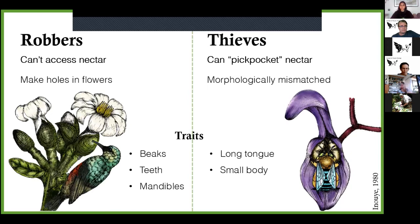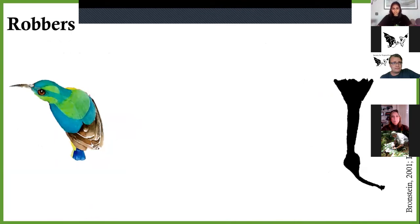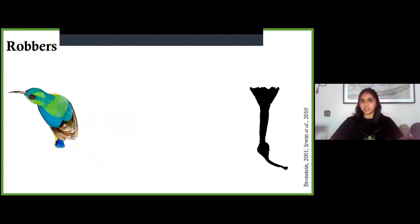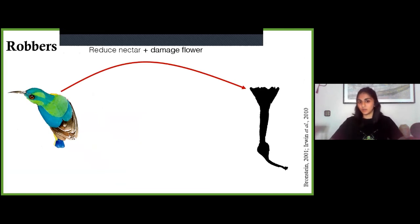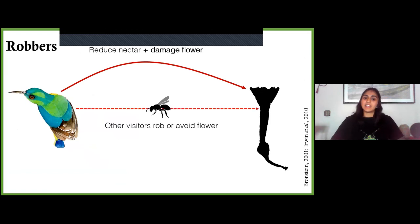Like in legal talk: robbers are visitors that need to use force to access floral rewards — they can't normally access nectar so they make holes in flowers. These can be sunbirds or the galagos you saw in Rob's video. Thieves on the other hand are visitors with morphologies that are a slight mismatch with the flowers — like the skipper butterfly in Rob's presentation — so they don't need to use force and can pick-pocket nectar. These are called morphological mismatches. Robbers usually have sharp beaks, strong teeth, or mandibles like carpenter bees; thieves tend to have long tongues or small bodies enabling them to access the nectar tube without touching any reproductive organs.